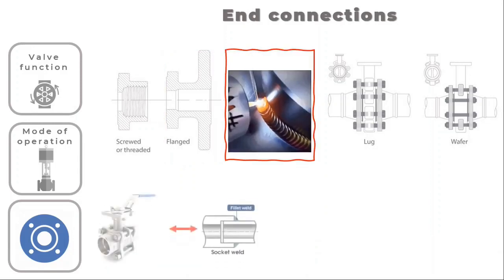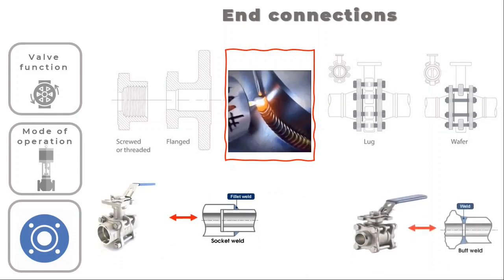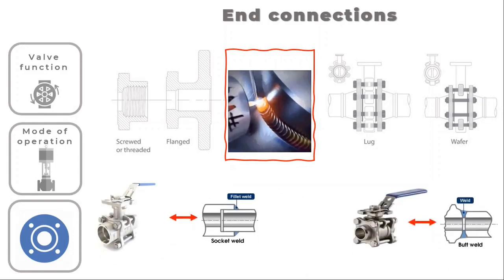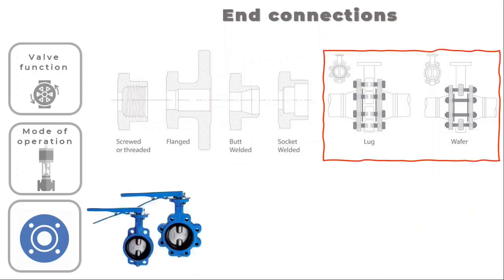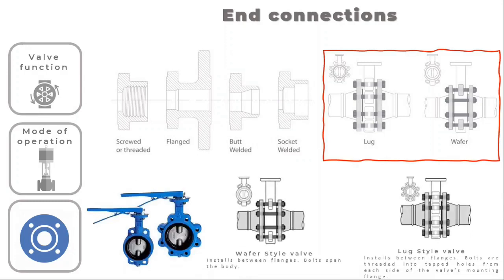For socket welding, the pipe is placed in a socket and welded. For the butt weld valve, the ends are beveled to match the pipe's bevel. Wafer and lug end constructions are provided for check valves and butterfly valves — these kinds of ends are used when there is limited room.